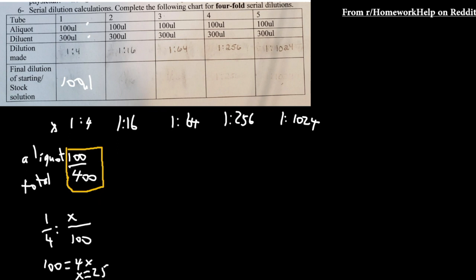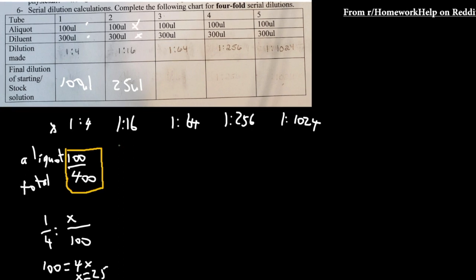25 out of that 100 is actually what your original solution is. So when you do this, when you add 100 now from the previous solution into your second, okay...